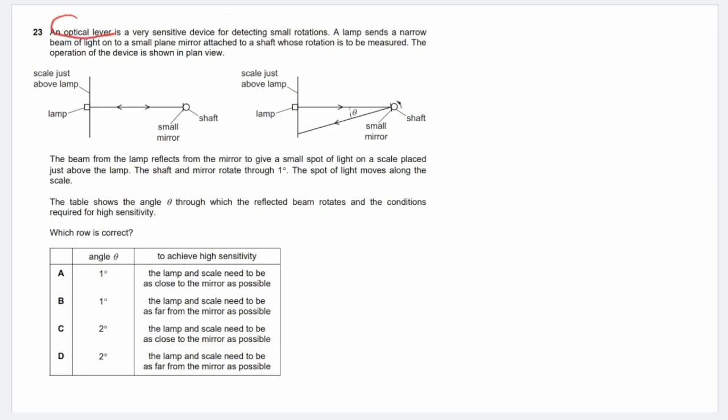An optical lever is a very sensitive device for detecting small rotations. A lamp sends a narrow beam of light onto a small plane mirror attached to a shaft whose rotation is to be measured. The operation of the device is shown in plan view, which means it's from the top view. If you look at the diagram here, we can see that the lamp is sending a beam of light to the mirror, which is then being reflected.